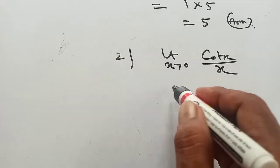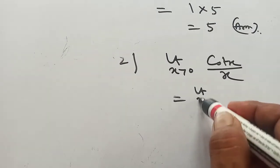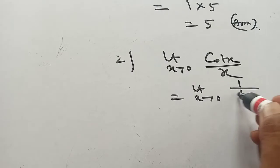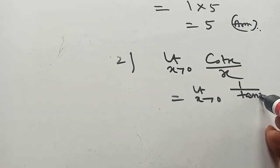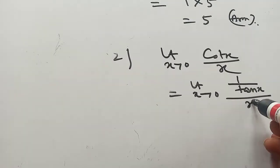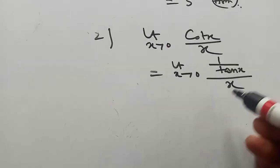Now also you write this one. Limit as x tends to 0, cot - cot means 1 by tan. 1 by tan x, by x. Now adjust it.